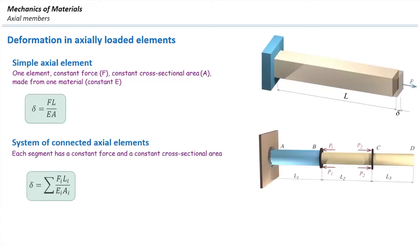Now, if we have a system of axially loaded elements connected together, like the one shown here, we need to split that into simpler parts. In this case, I'm going to split it into three different segments, calculate the deformation in each of those segments, and then add them together to determine the total deformation in the system. Because in each segment, the cross-section area is constant and the force is constant, so it can be calculated by splitting into simpler segments.